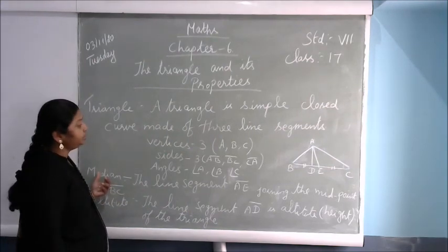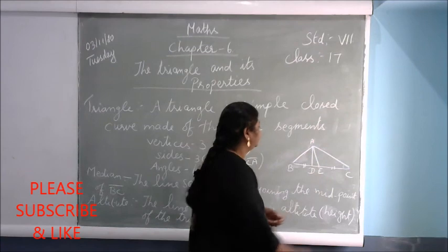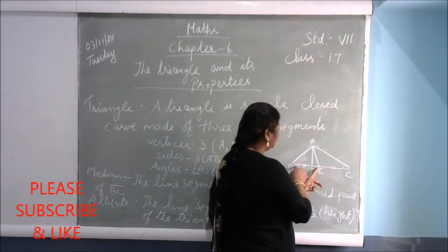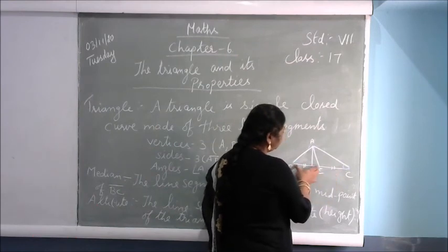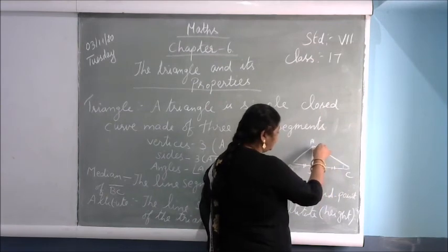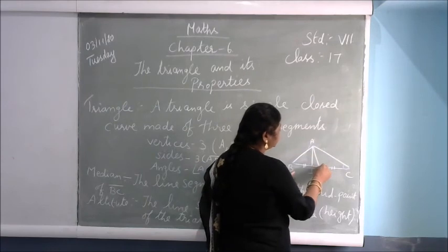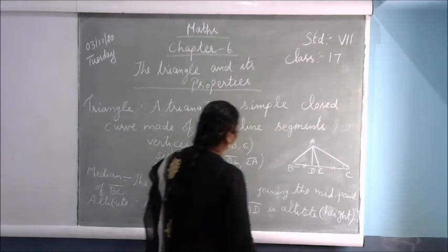What is the median? The median is line segment AE, which cuts BC into two equal parts. If one part is three centimetres, the other part is also three centimetres — it meets at the midpoint. That is called the median. So AE is your median.